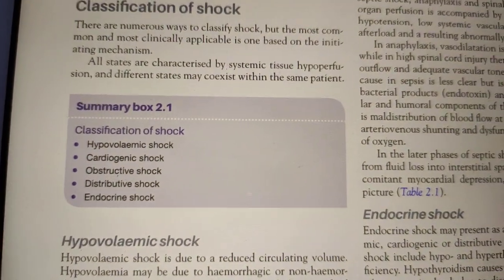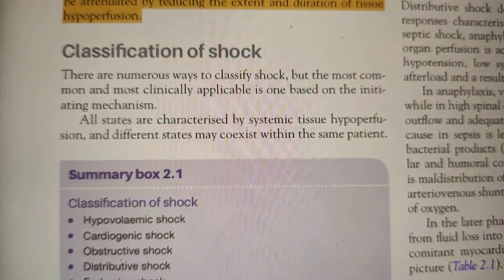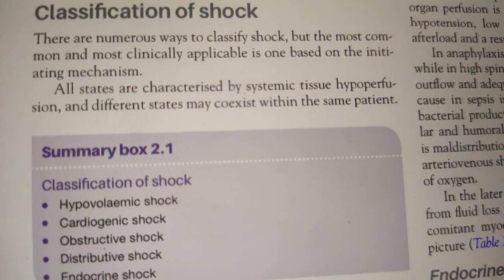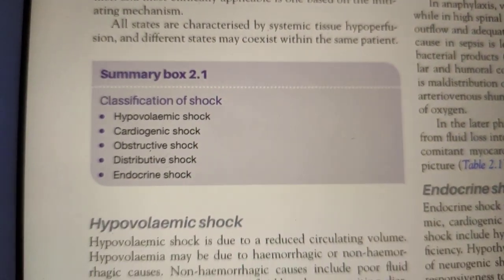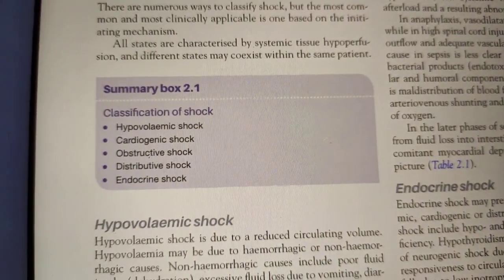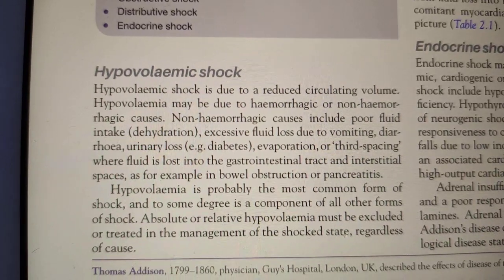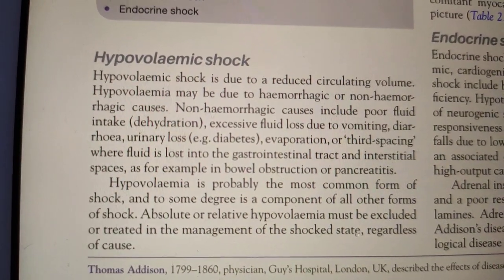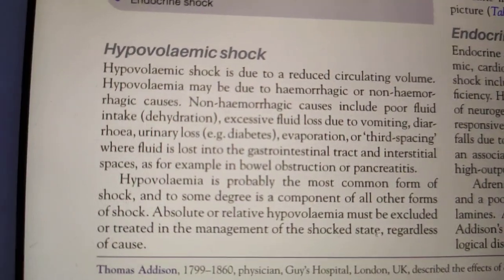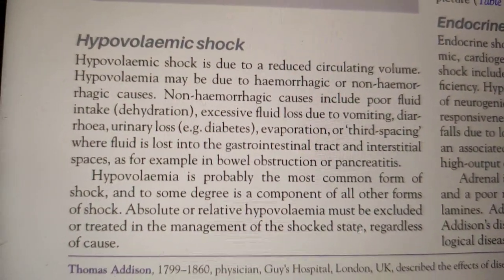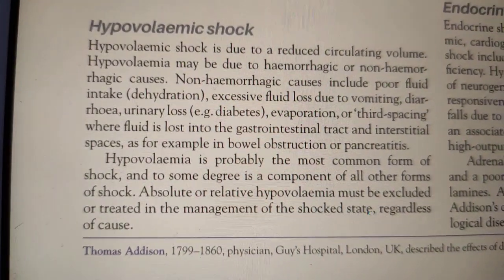Now we move to the classification of shock. We have hypovolemic, cardiogenic, distributive, and obstructive shock, and endocrine is a combination of these. In hypovolemic shock we have either hemorrhagic or non-hemorrhagic. Non-hemorrhagic causes include vomiting, diarrhea, sweat loss, and third-space loss, which mainly occurs in intestinal obstruction or pancreatitis.